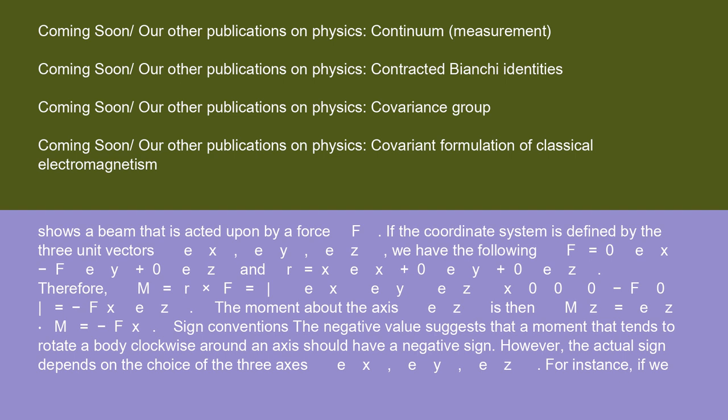The moment about the axis ez is then Mz = ez · M = -Fx. Sign conventions: the negative value suggests that a moment that tends to rotate a body clockwise around an axis should have a negative sign. However, the actual sign depends on the choice of the three axes ex, ey, ez. For instance,